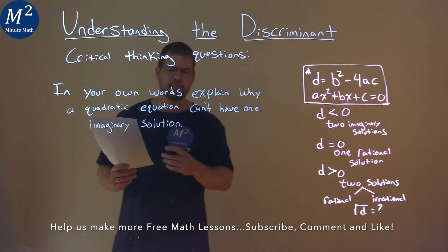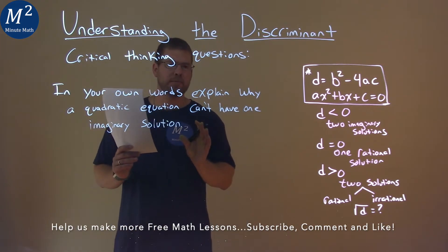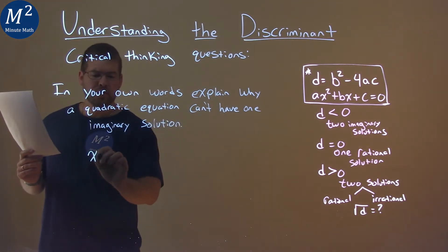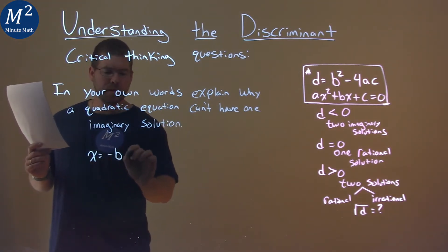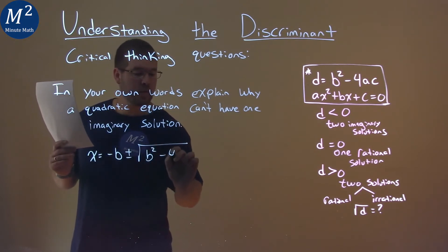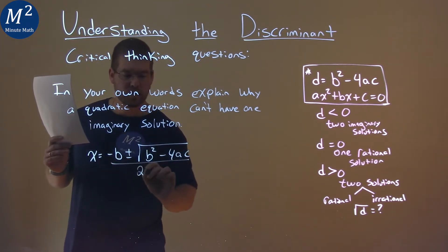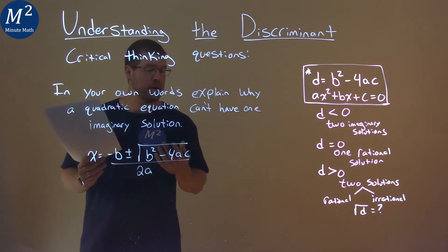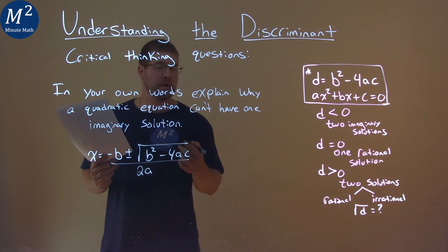Now this is a good question and this actually comes down to, well, let's look at the quadratic formula. x equals the solution, negative b plus or minus the square root of b squared minus 4ac all over 2a. Hopefully you can find where the discriminant lies, that b squared minus 4ac.